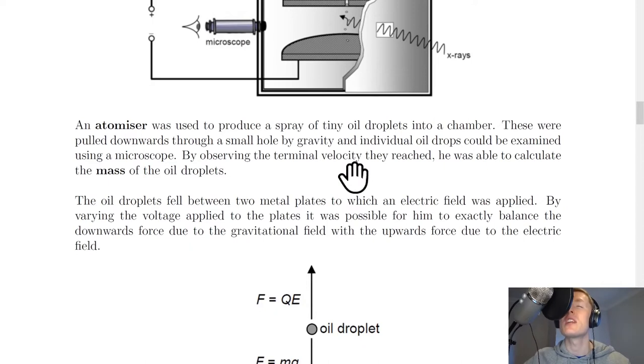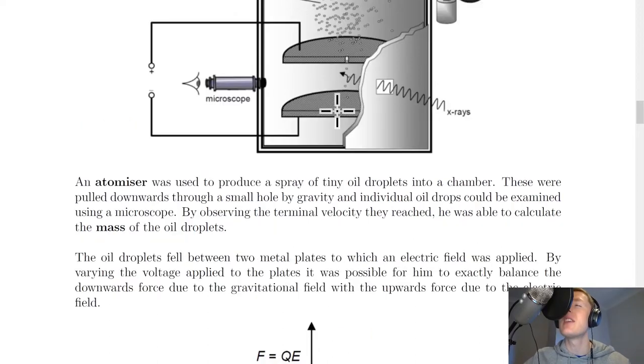Remember terminal velocity is the constant speed reached when the downwards gravitational force is balanced by some upwards frictional force. And in this case we're talking about an electric field between these two plates. So the force upwards here is an electric force.